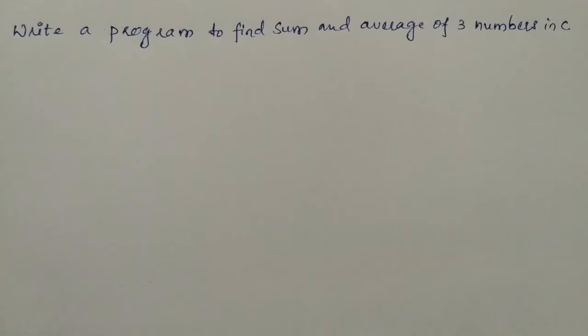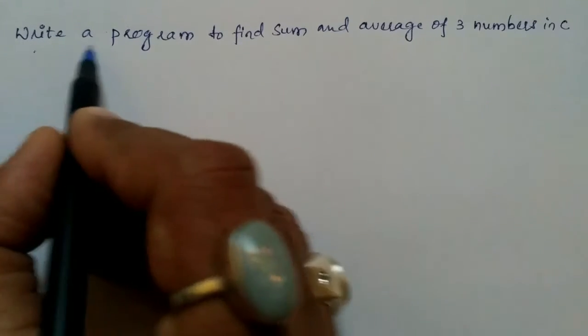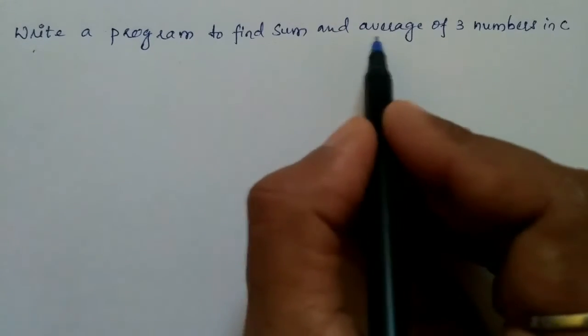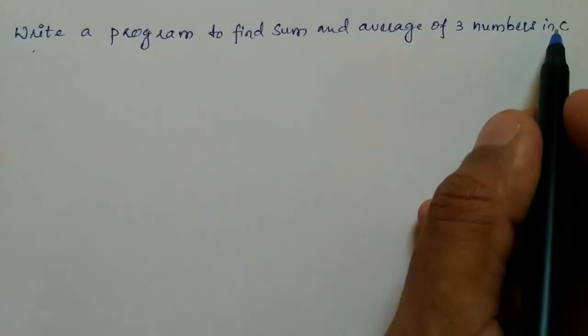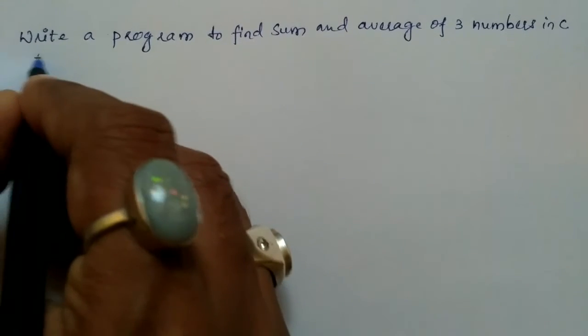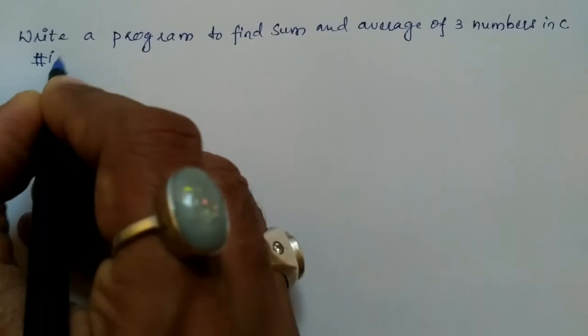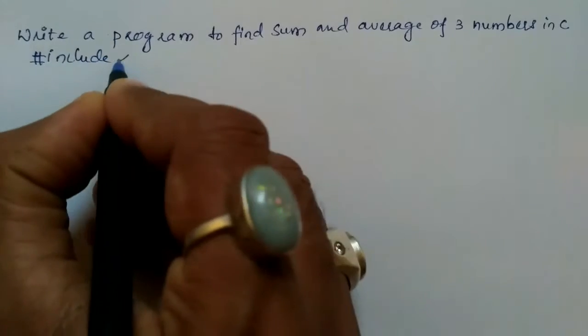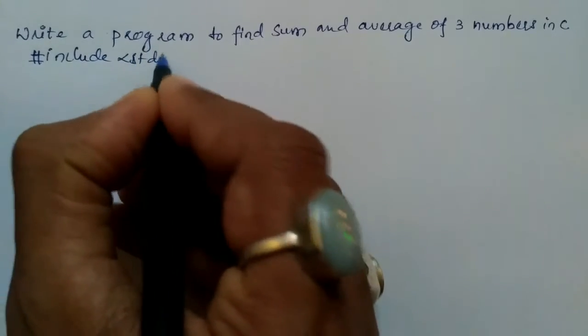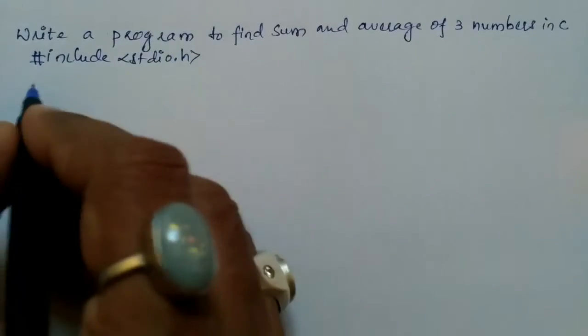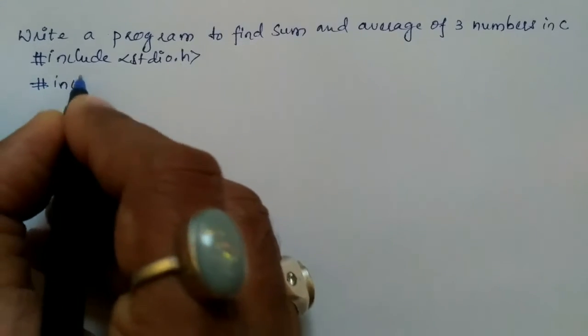Hello and welcome to Vision Academy. My name is Hanuman Ladwa and in this video we are going to write a program to find sum and average of three numbers in C. Let us begin with the preprocessor directives: #include <stdio.h>, #include